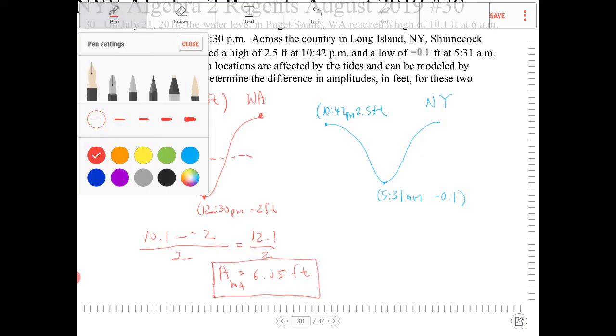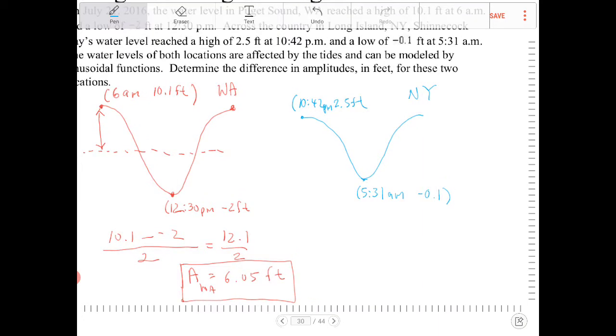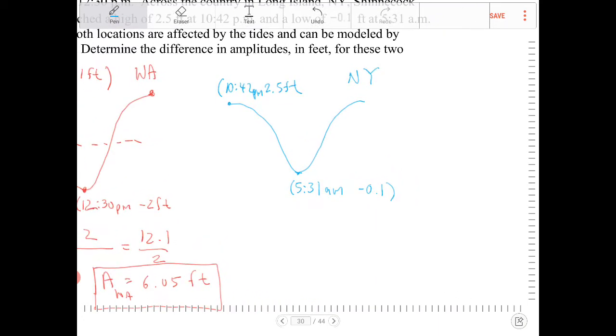Let's now repeat this for New York, Shinnecock Bay. We're going to take 2.5, subtract negative 0.1, divide by 2, and that would be 2.6 over 2. So the amplitude of New York's Long Island will be 1.3 feet.